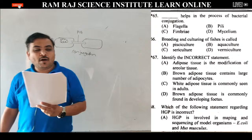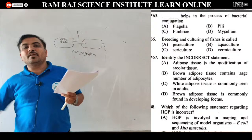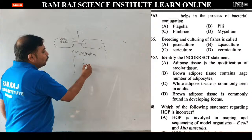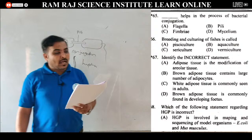Flagella एक tail जैसा structure होता है which is used in locomotion of bacterial cell. Fimbriae जो होते हैं वो female reproductive system के finger-like projections हैं to catch the ovum. Mycelium — a name given to the thread-like structures of fungus. एक single thread को hypha बोलते हैं, and the group of hyphae is called mycelium.